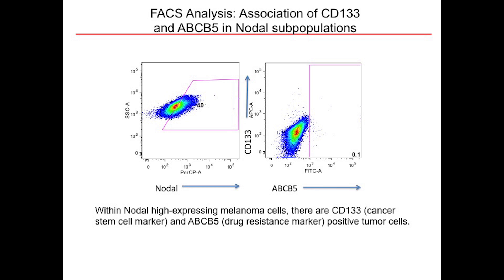Using fluorescence-activated cell sorter analysis, we looked for nodal expression in metastatic melanoma cells in relation to CD133, the cancer stem cell marker, and now for the first time we add ABCB5, which is a specific drug-resistance marker. We can now look at three different markers using nanoflare technology and live cell sorting, pinpointing cells that are nodal-expressing, cancer stem cells, and also drug-resistant — a very important advancement in our field.